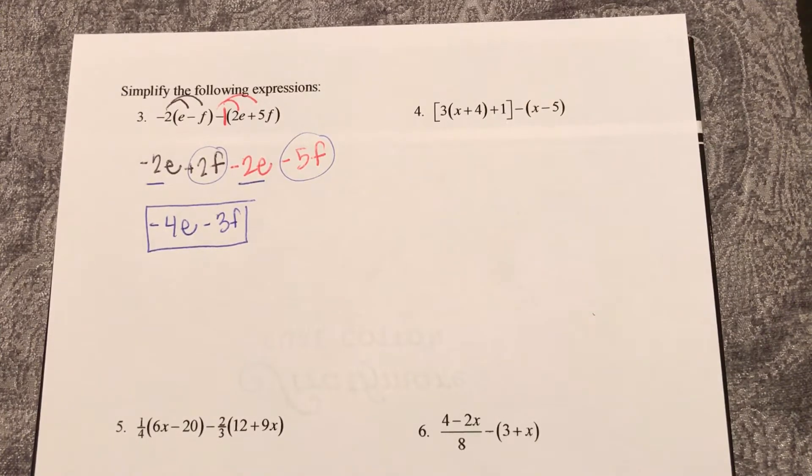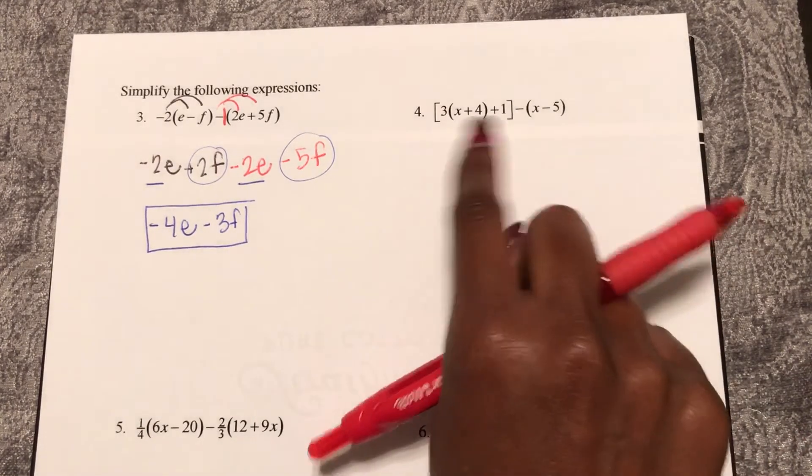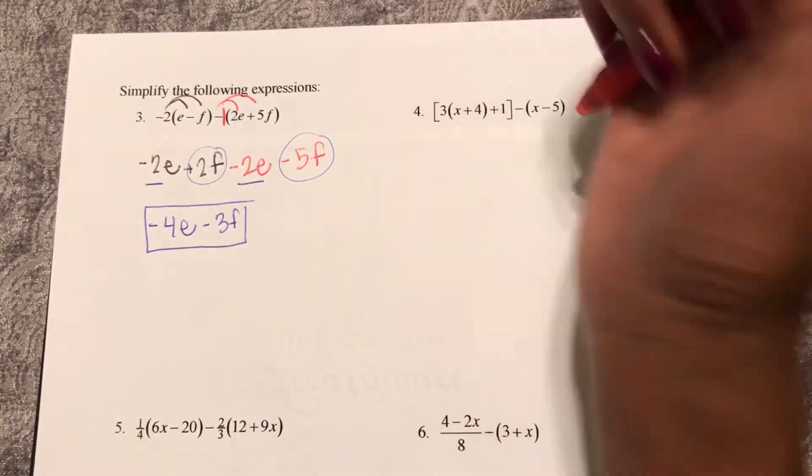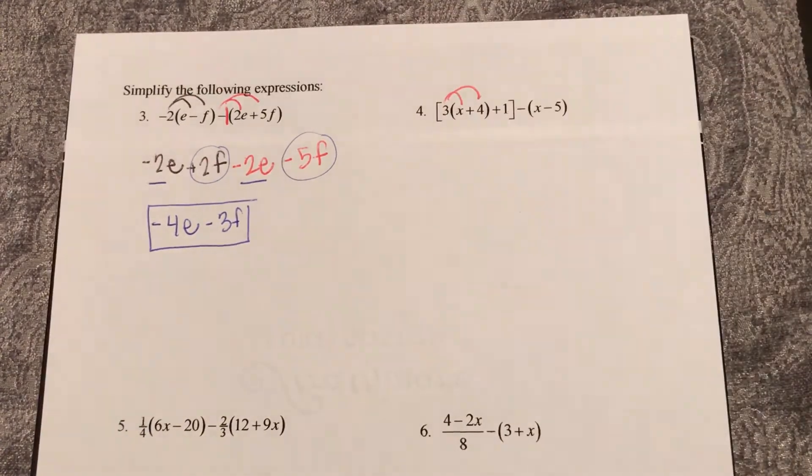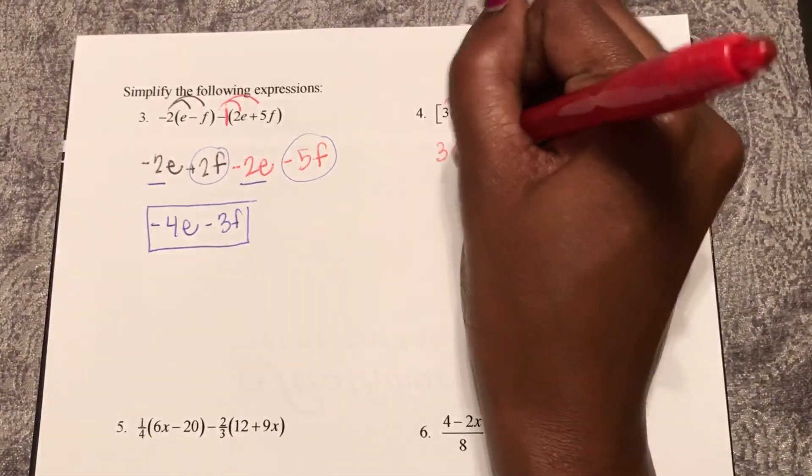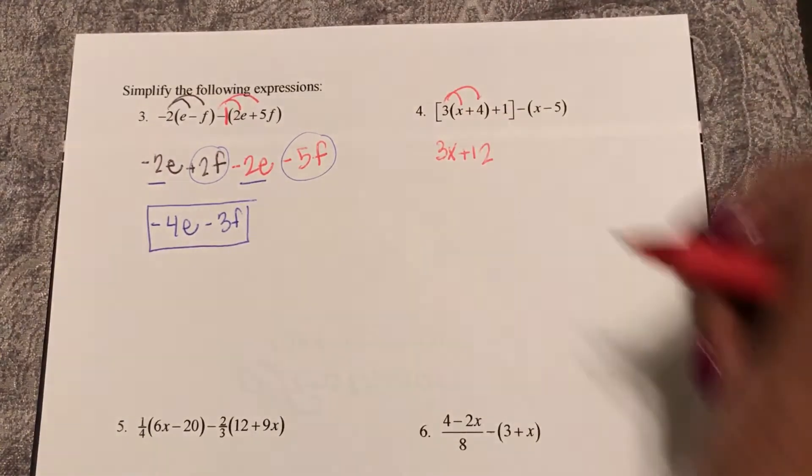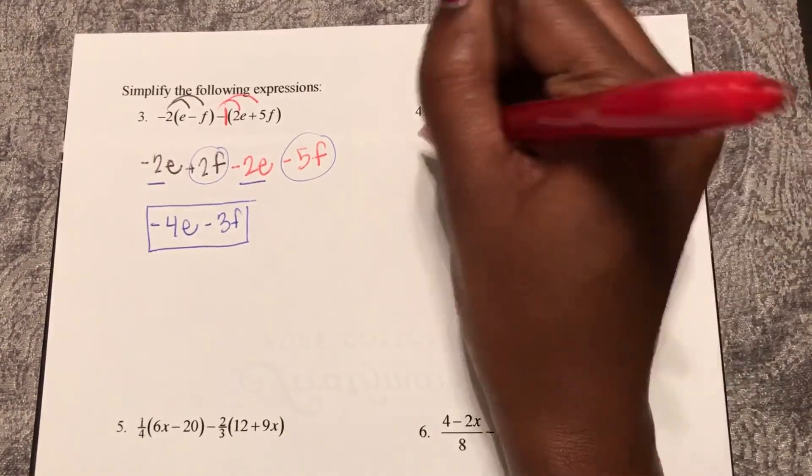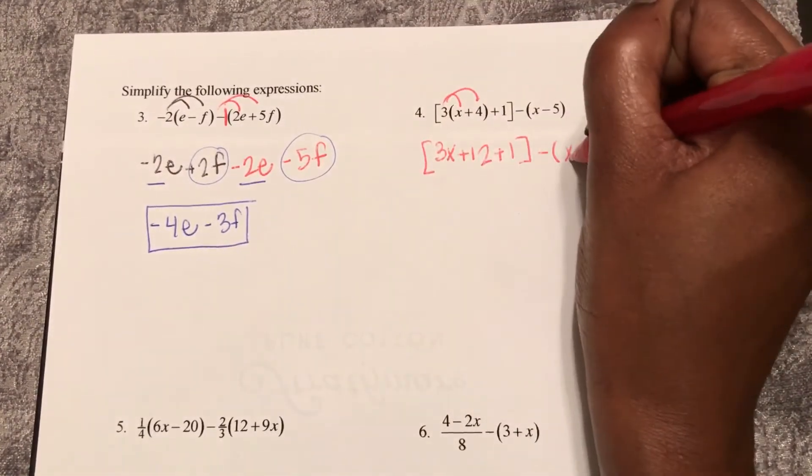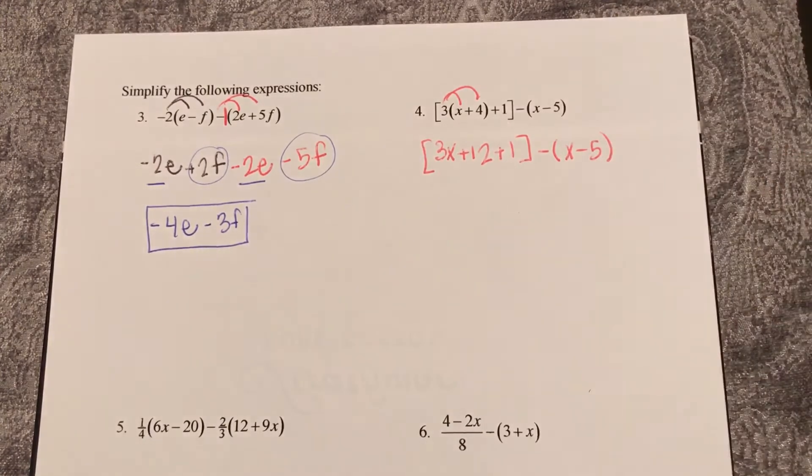So now remember on number 4, I want to simplify what's inside my parentheses or brackets first. Within these brackets, I'm going to distribute this 3. So now I have 3x plus 12 plus 1, and that's still subtracting x minus 5.